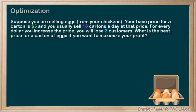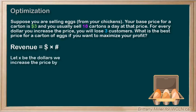We can't really draw a diagram for this one, so we'll skip that step. What are we trying to maximize? Our revenue — the money we make from selling our eggs. R for revenue will be equal to the price of a carton of eggs times the number of cartons we sell. So let X be the number of dollars we increase the price. Then the price will be 3 plus X, and since we lose three people for every dollar we increase, the number of cartons we sell will be 18 minus 3X.